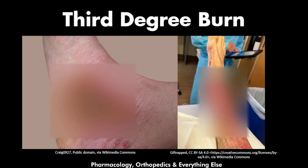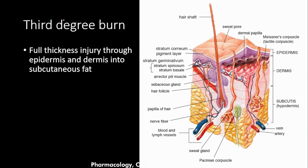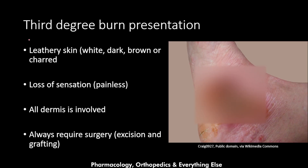Here we will talk about third degree burns. These burns involve all layers of the skin. A third degree burn is a full thickness injury through the epidermis, dermis, and into the subcutaneous fat. Unlike the second degree burn, which is called partial thickness, the third degree burn is called full thickness because it involves all layers of the skin.